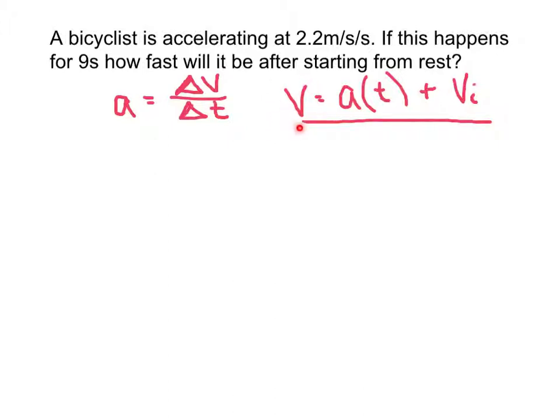Well, we're looking for velocity, so that's our unknown. We know what the acceleration is because that's given in the problem. It's accelerating at 2.2 meters per second for every second. So we can write that in place of A. We have given in the problem that this happens for 9 seconds, so that's how much time is taking place here. 9 seconds.